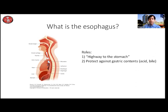So what does the esophagus do exactly? It has two main functions. The first is that it is a conduit or passageway for food and liquid to get from the mouth to the stomach — really a highway to the stomach. The other important property is that it protects the airway against contents that can come up from the stomach and could cause damage, specifically acid and bile.